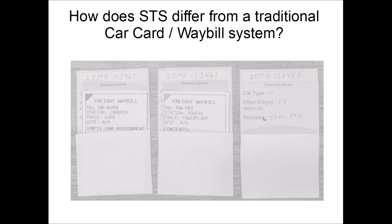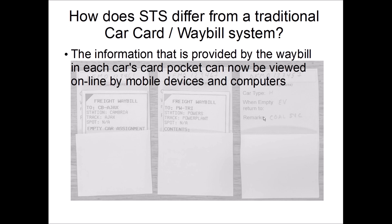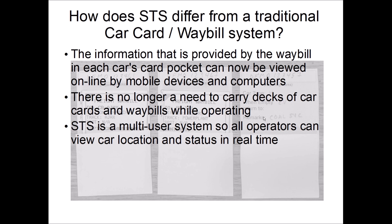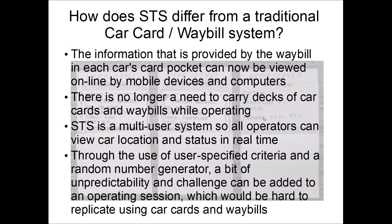So how does STS differ from the traditional car card waybill system? First of all, all the information that's on those pieces of paper is now available online via mobile devices and computers — you no longer need to carry decks of cards around. It's a multi-user system, so all operators can view the status and location of all cars at any given time. Also, because the computer can use a random number generator, it puts a little unpredictability into the system, which is something that's hard to do with traditional car cards, especially for a single operator.